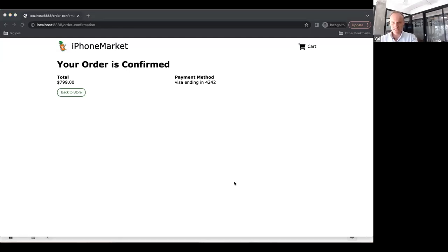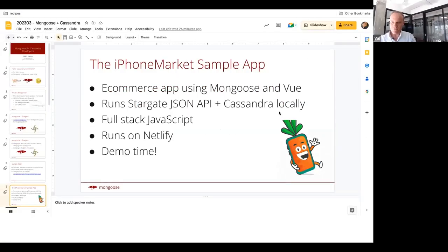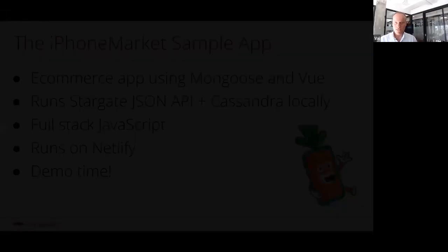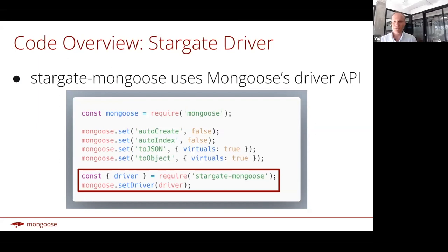Now that you've seen the high level of the sample app, let's take a look at what the actual source code looks like. Stargate Mongoose uses Mongoose's driver API, which lets you plug in a different underlying data storage layer for Mongoose. Here's some Mongoose code where you import Mongoose, set a bunch of global options, and set a driver. Ideally, if you want to switch an existing Mongoose application to use Stargate, those two lines of code in the red box on the screen is all you need to change.